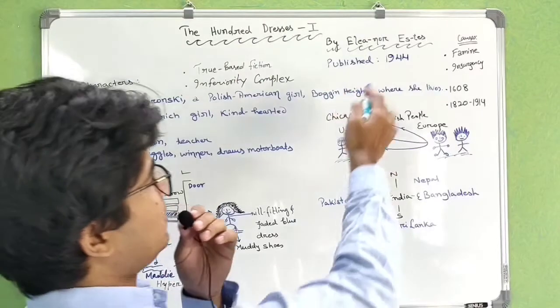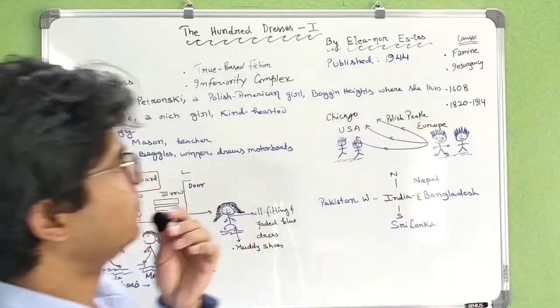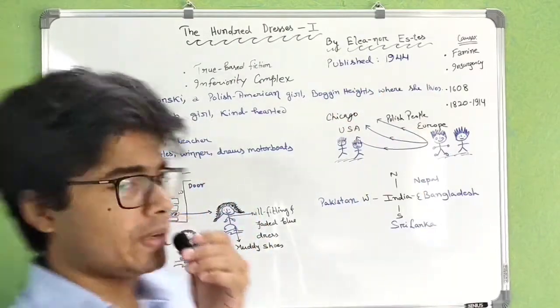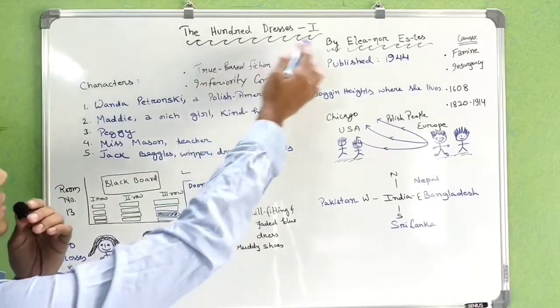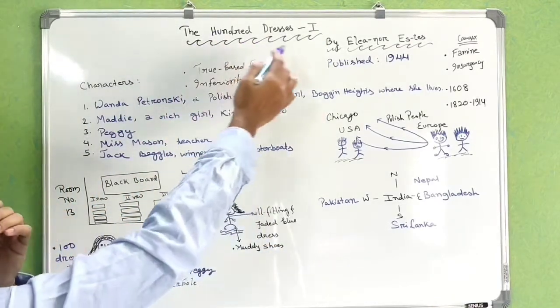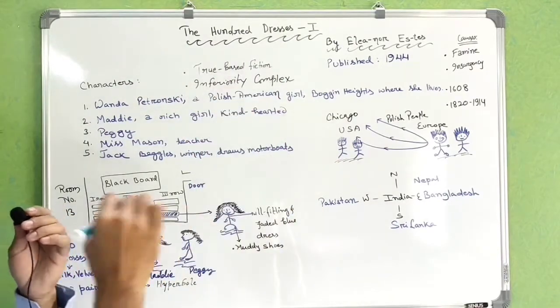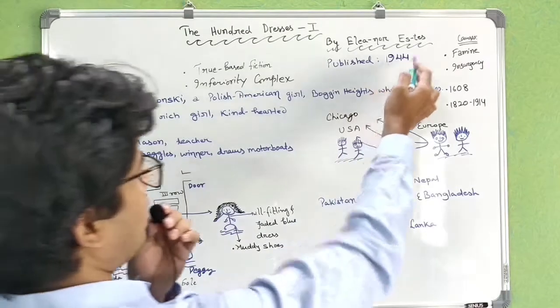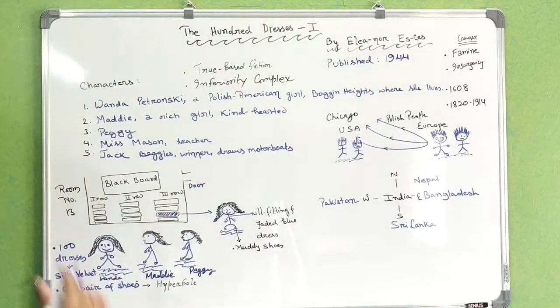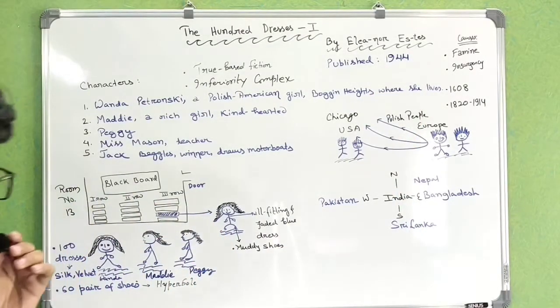The 100 Dresses was published in the year 1944. In your syllabus, The 100 Dresses has been categorized into two parts: Part 1 and Part 2, but the whole version in a single manner was published in 1944.